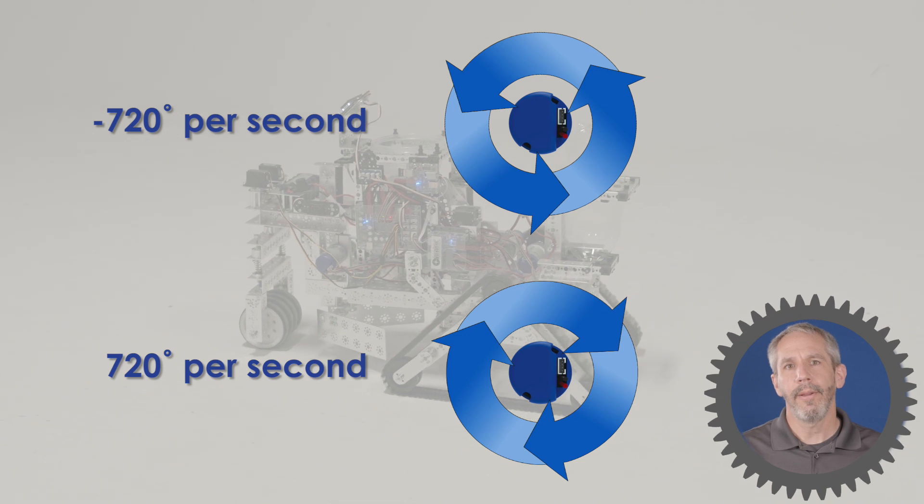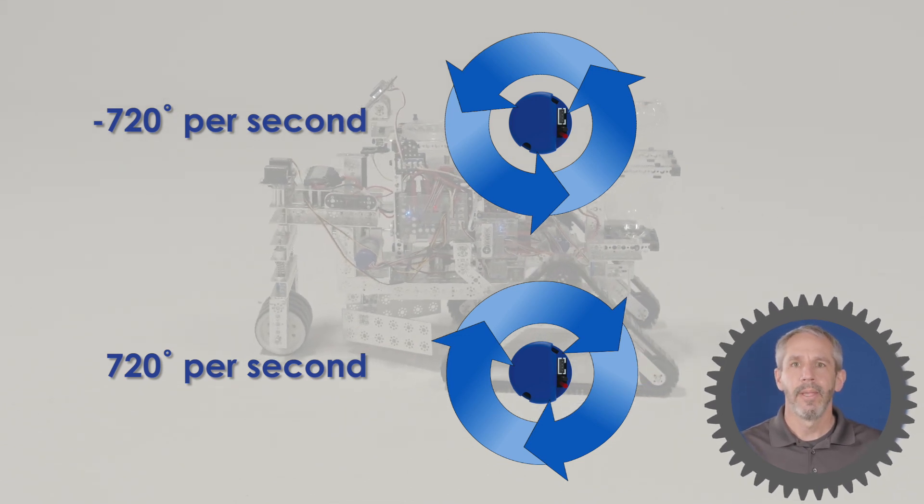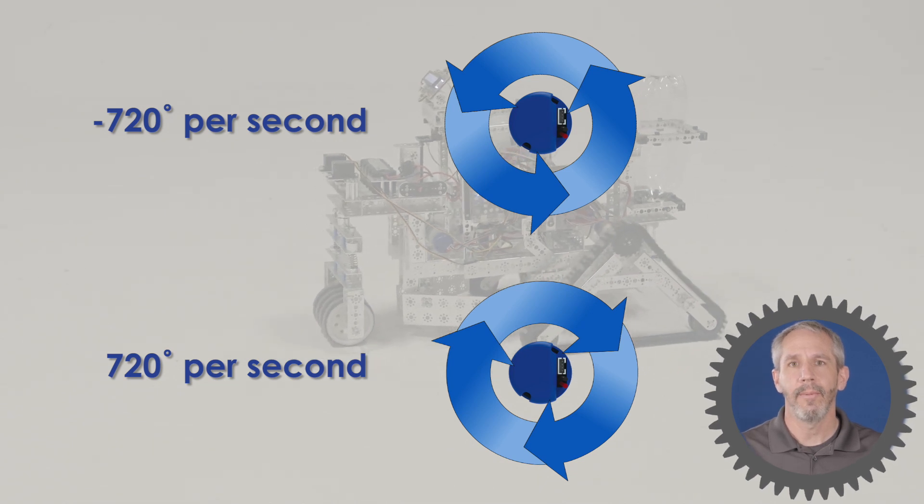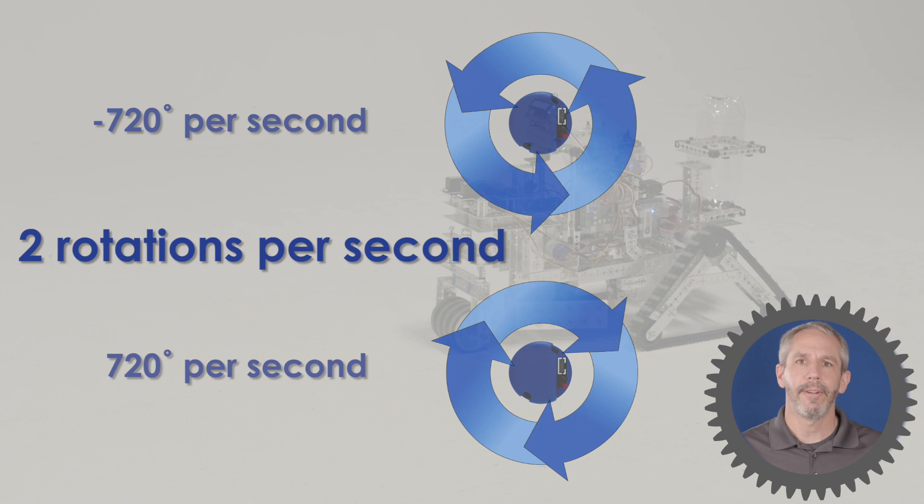So there are 360 degrees in one rotation. If you're using the standard 60 to 1 gearboxes that come on a torquenado, that's two rotations per second in either direction.